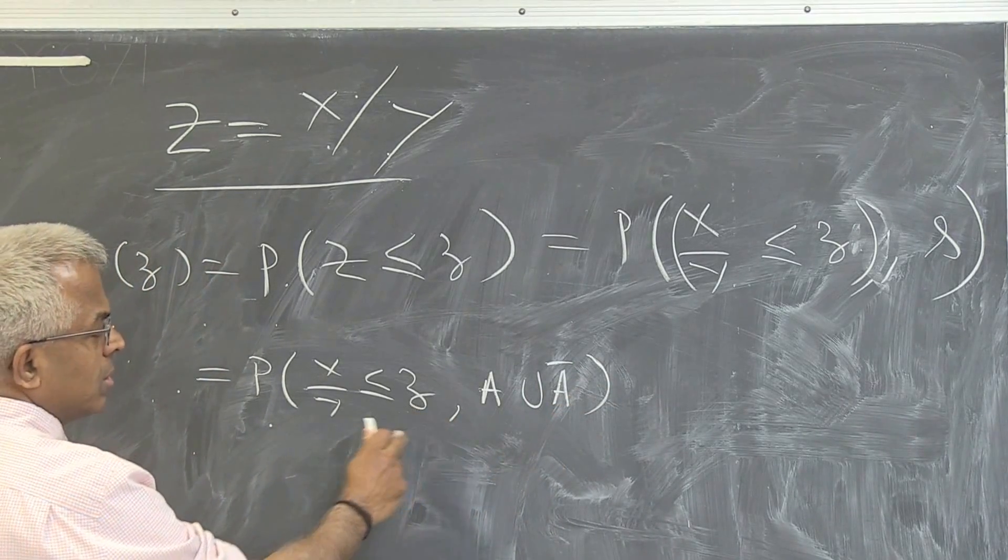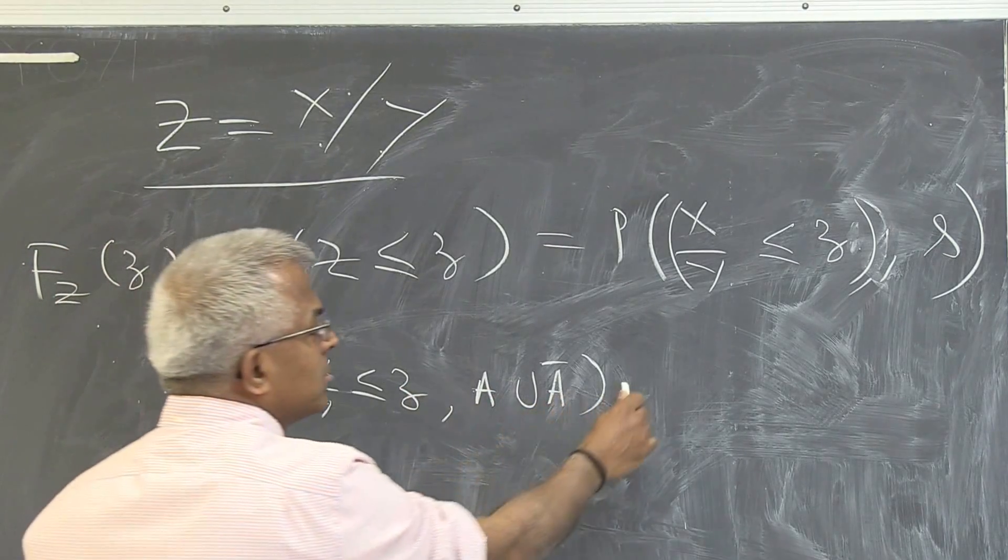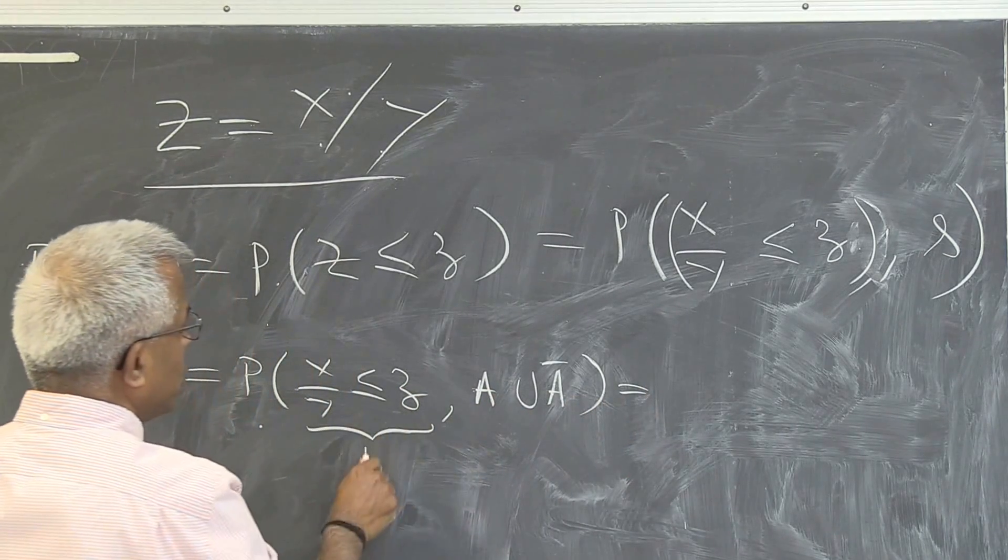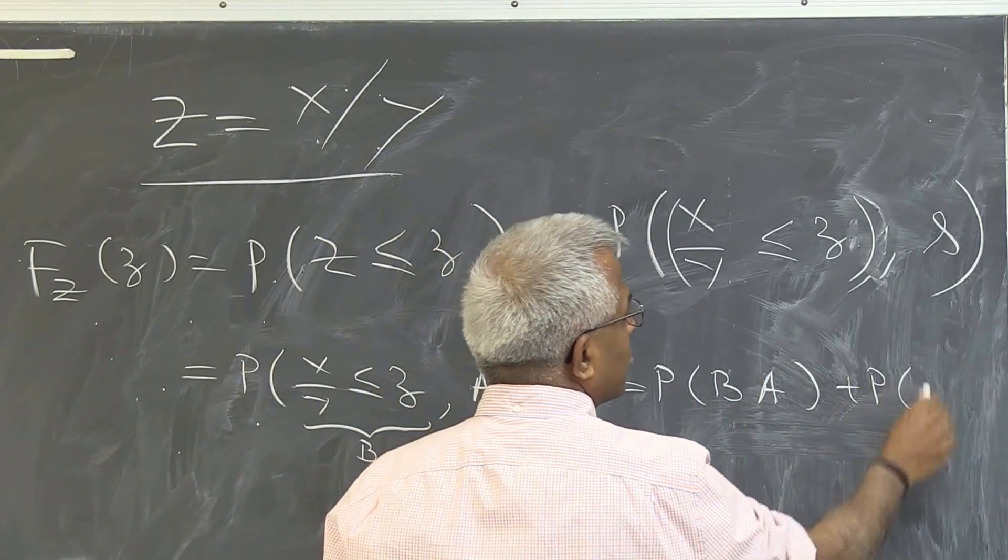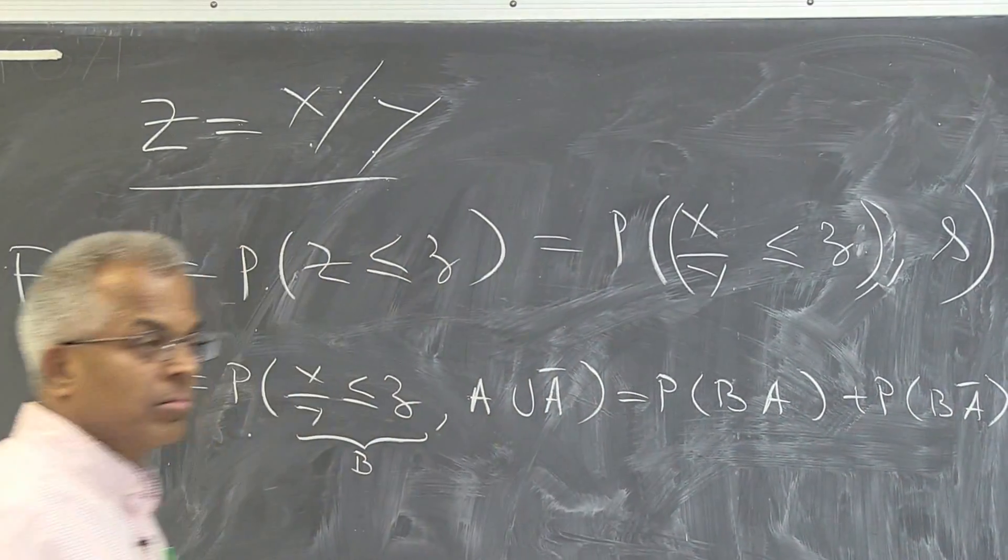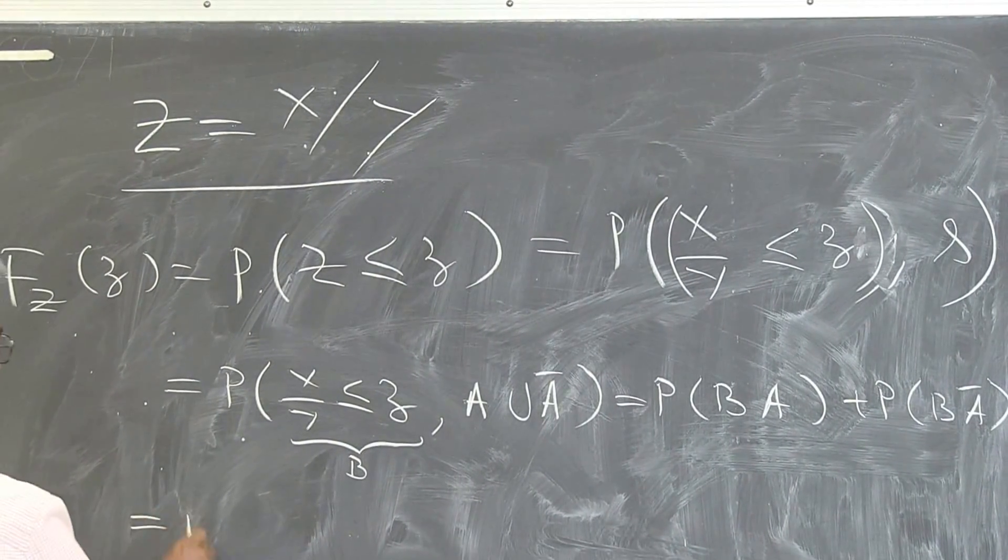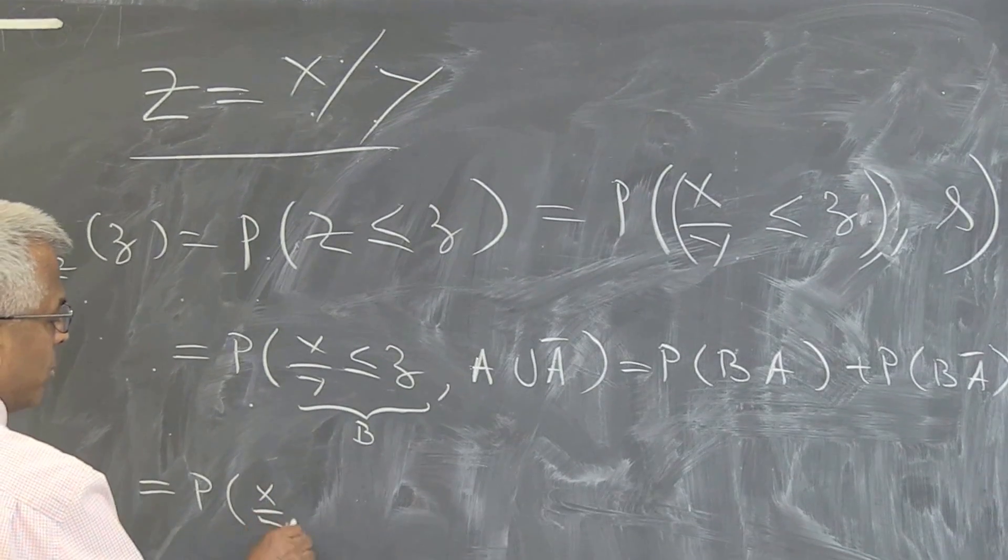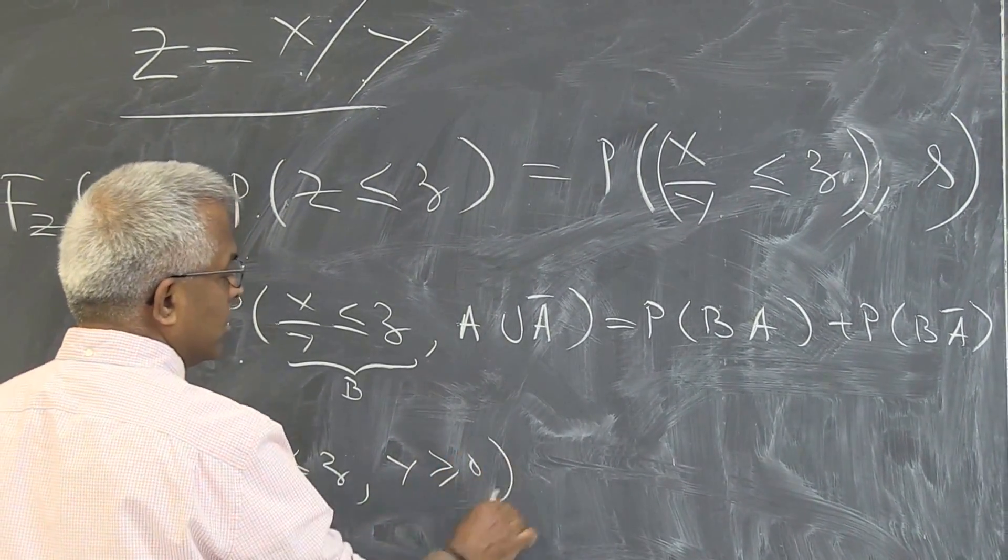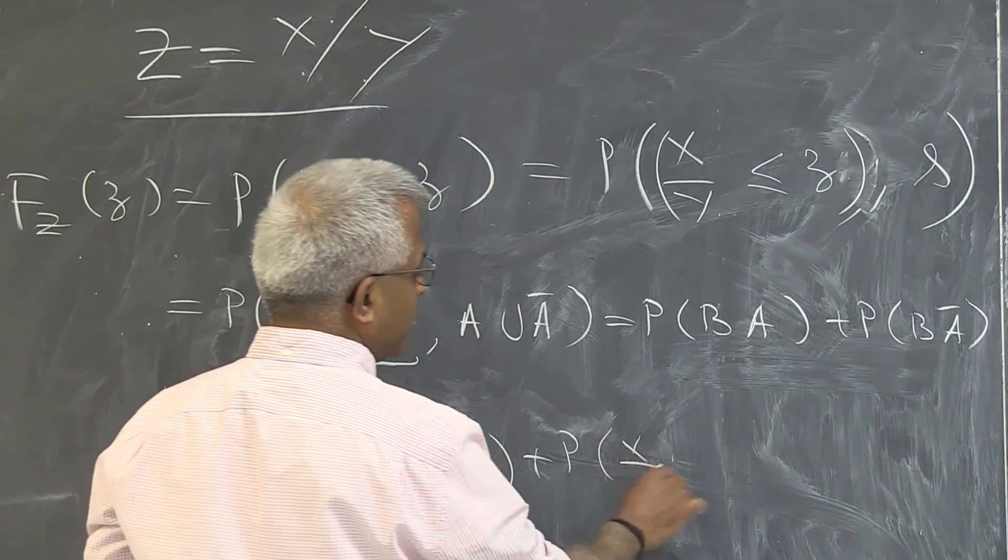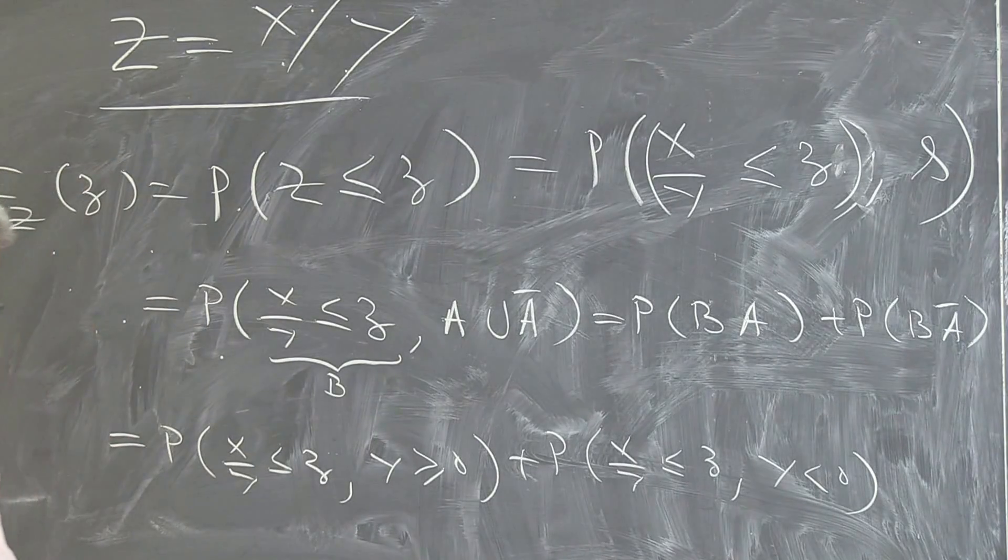So I can write this as probability of x over y less than z intersection with a union a bar. Intersection. So this is like b intersection a plus b intersection a bar, right? So if you read this to be b, is this, right? Basic probability, right? So now let me substitute for b. b is x over y less than or equal to z and a is what? y positive plus probability of x over y less than z y negative.